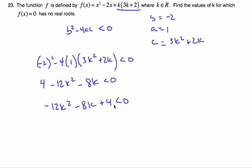I'm going to divide everything by a minus 4, so I get 3k squared plus 2k minus 1 is bigger than 0. I have to take this and switch the sign, because I multiply it or divide by a negative.